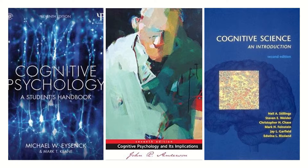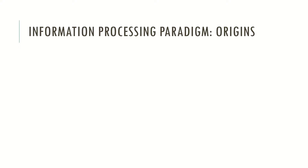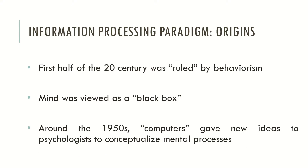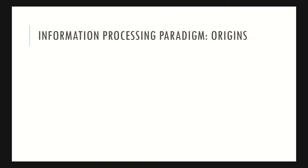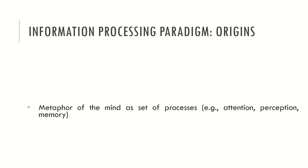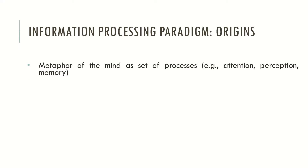Now let's see what the information processing paradigm is. The first half of the 20th century was ruled by behaviorism and the mind was viewed as a black box. However, around the 1950s, computers gave new ideas to psychologists to conceptualize mental processes. This approach helped psychologists move beyond the black box metaphor and describe the mind as a set of processes such as attention, perception, and memory.